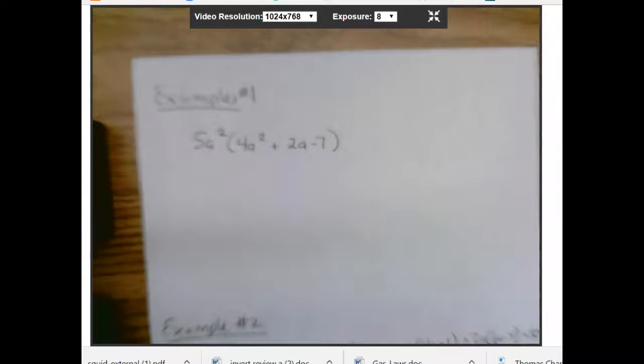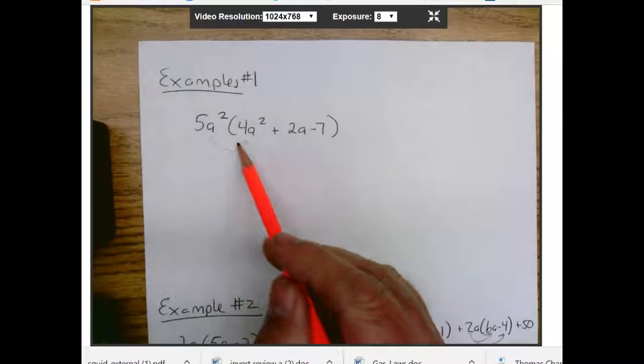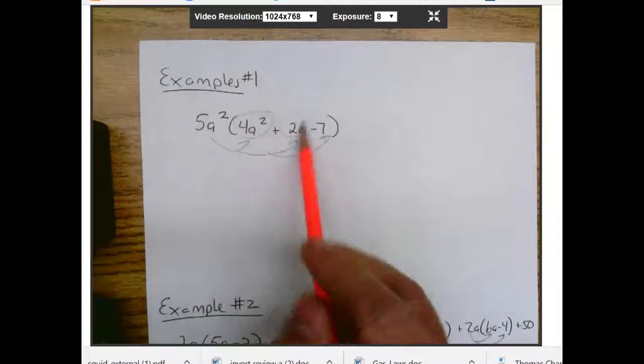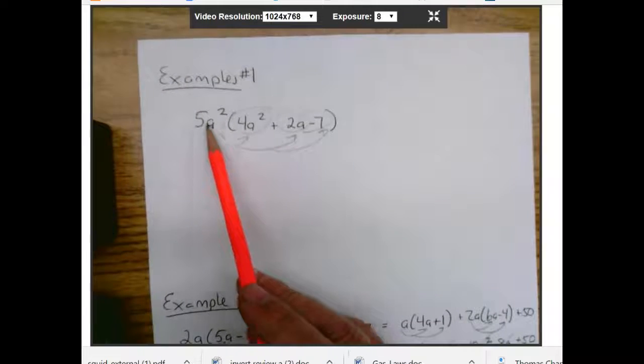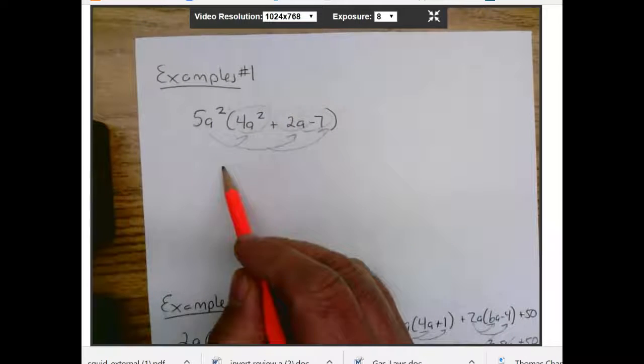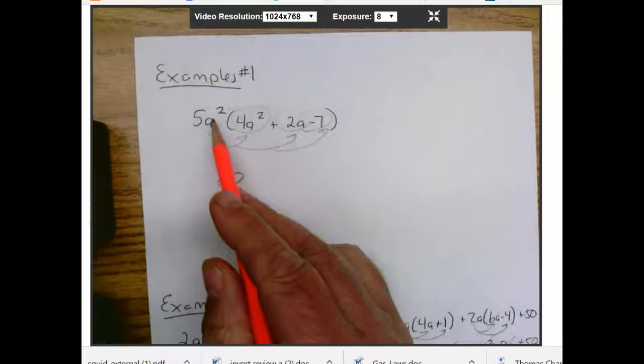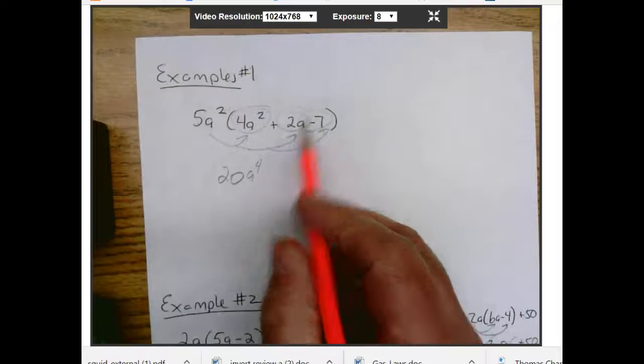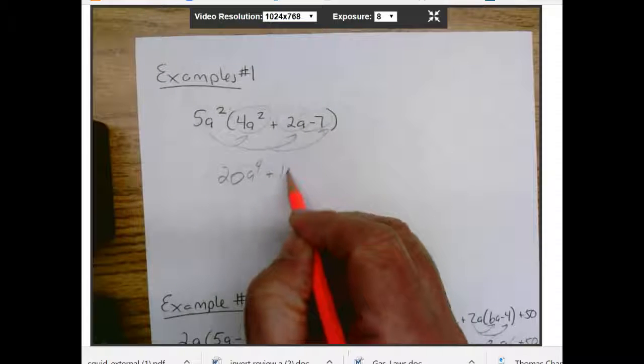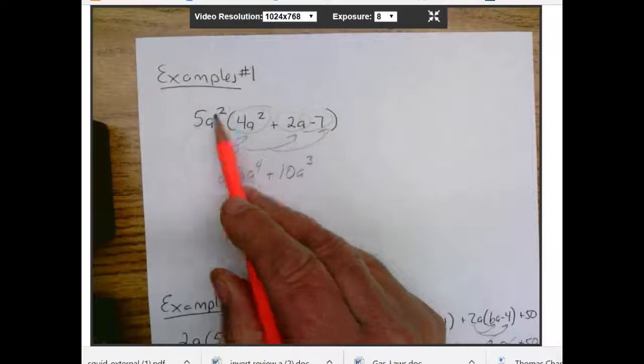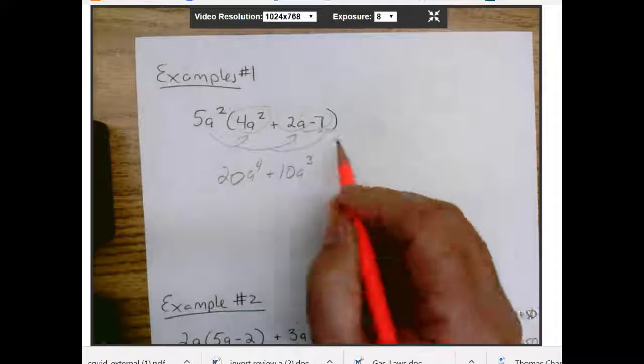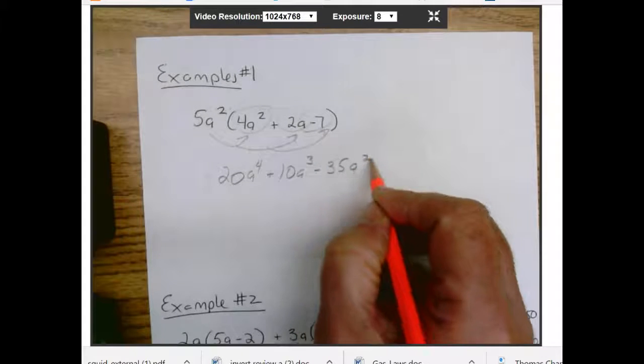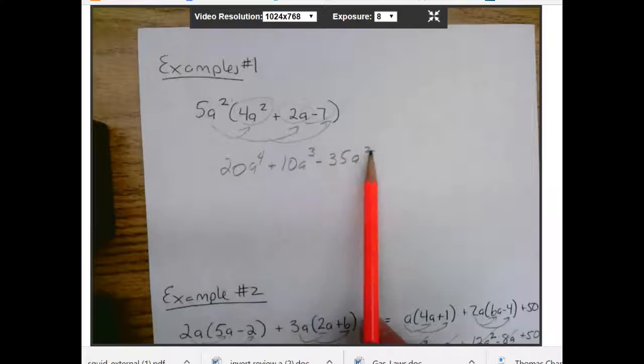Let me just show you one more example of this distributive property as well. So you can get one more thing for your notes. Again, we're going to distribute this to both this one, this one, and this one. Let's see what that looks like one more time. So 5a squared times 4a squared. We do 5 times 4 is 20. And we count them. 2 and 2 gives us 4. a to the 4th. And we do it again. 5a squared times 2a. That's going to give us 10a to the 3rd. And then 5a squared times negative 7. That's going to give us negative 35a squared. And it's also written in standard form. 4 to 3 to 2. So that's good.